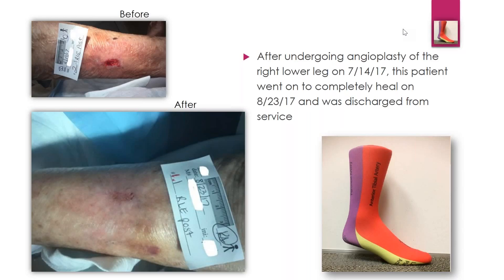The picture in the lower right is the actual angiosome sock we use in the wound center. The orange area is the anterior tibial artery — the main flow coming down into the lower extremity. It covers the entire anterior portion and turns into the dorsalis pedis artery. The yellow area at the bottom of the foot shows where the anterior tibial artery transitions into the lateral plantar artery. So even if there's a blockage in the anterior tibial artery, it feeds into the lateral plantar artery, and knowing that those two flow together helps you identify which angiosomes are affected.